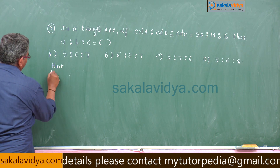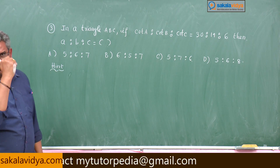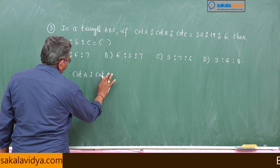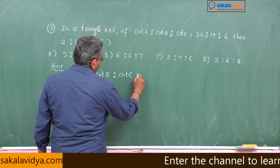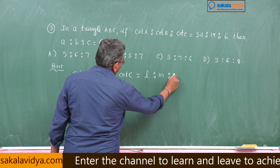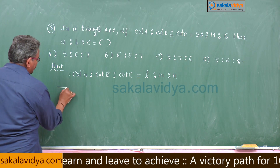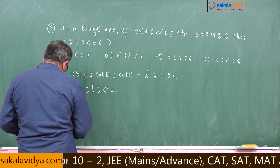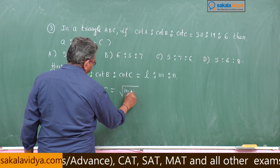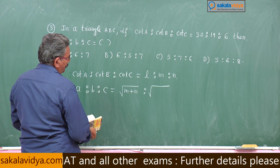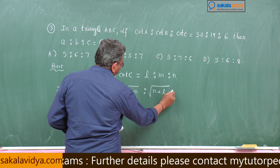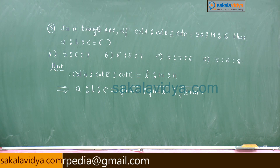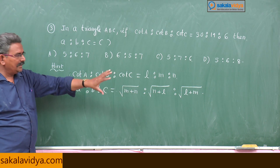This can also be remembered using a shortcut. Suppose cot a : cot b : cot c = l : m : n, then that implies a : b : c = √(m+n) : √(n+l) : √(l+m).